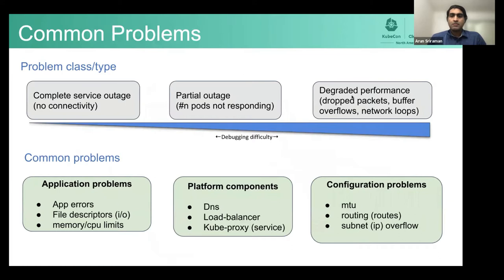So the way I see it, when you have a networking issue, it's good to think about it in two terms or two ways. One is think about the impact. So what kind of an outage is it? Is it a complete service impact or is it partial outage or is it degraded performance? So place the problem that you see in one of these three buckets.